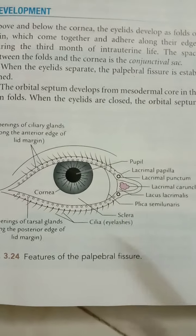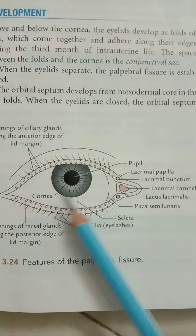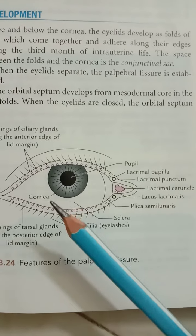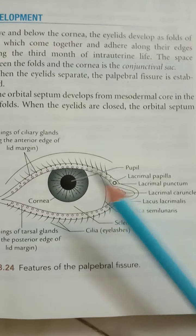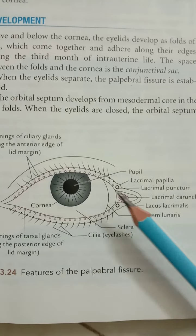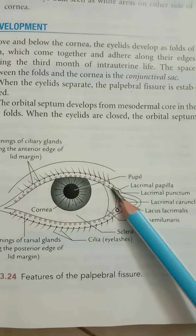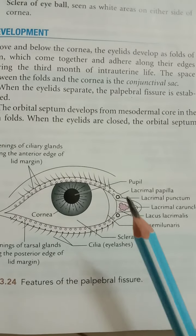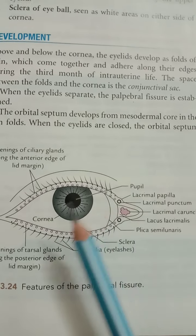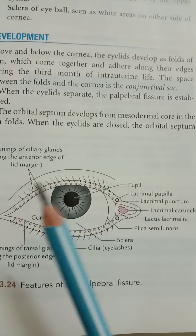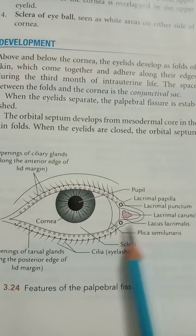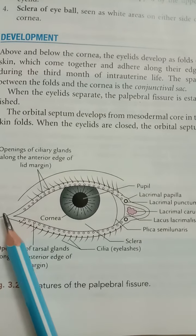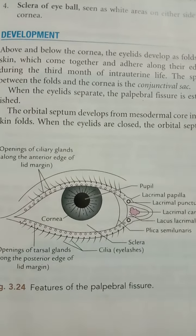The eyelids are upper and lower movable structures which protect the eye from foreign bodies and bright light. They keep the cornea clear and moist. The upper eyelid is larger and more movable than the lower eyelid. The space between the eyelids is called the palpebral fissure. The two eyelids are fused on the medial and lateral sides, called the medial canthus and the lateral canthus.